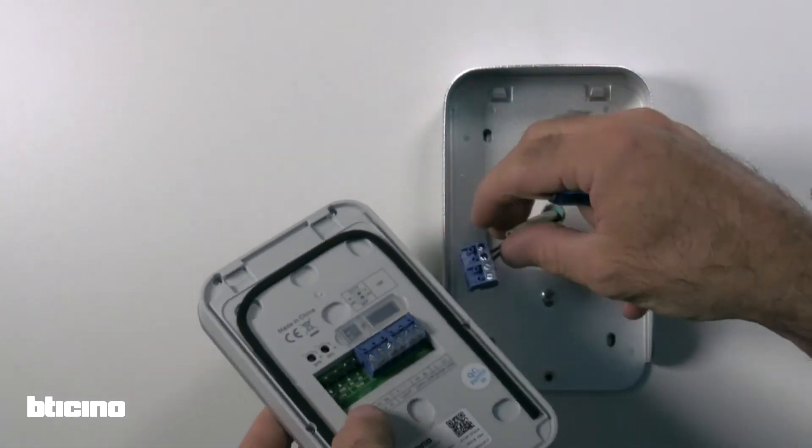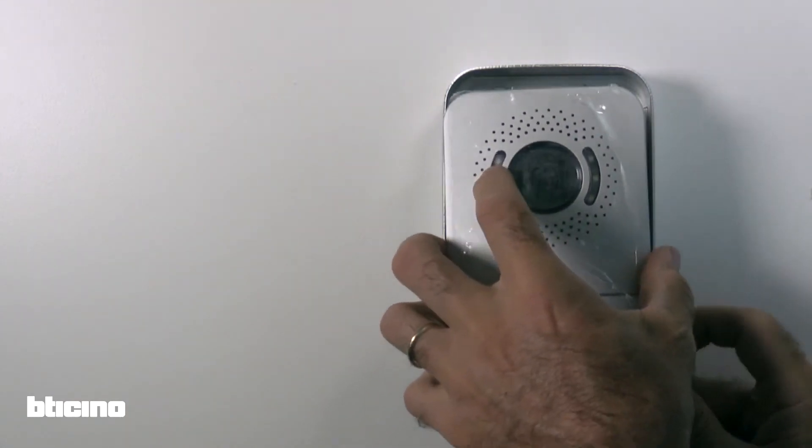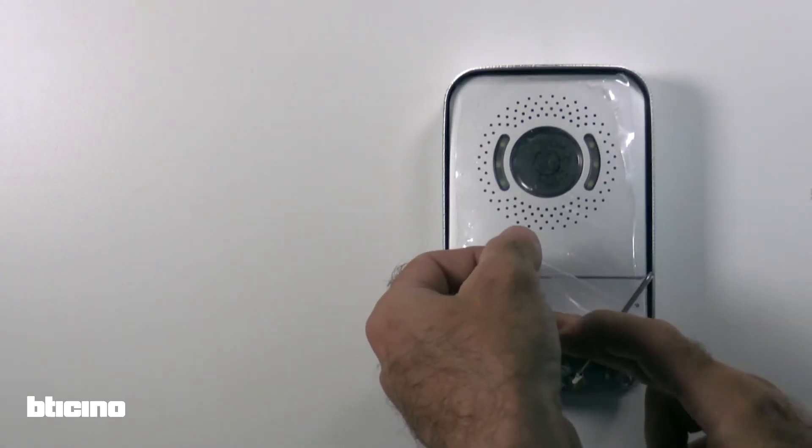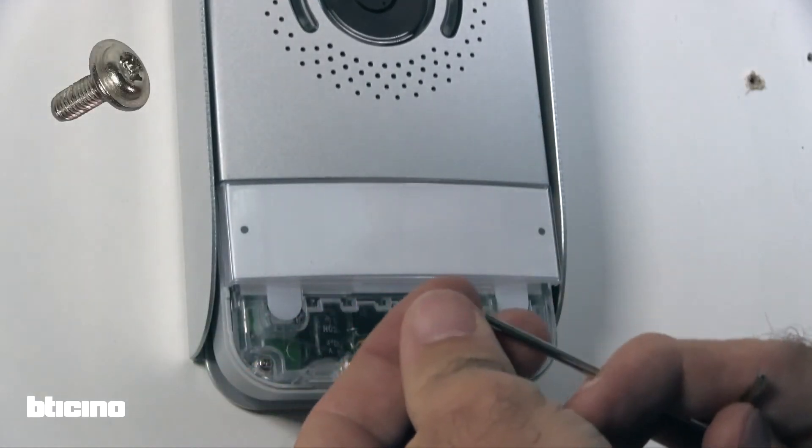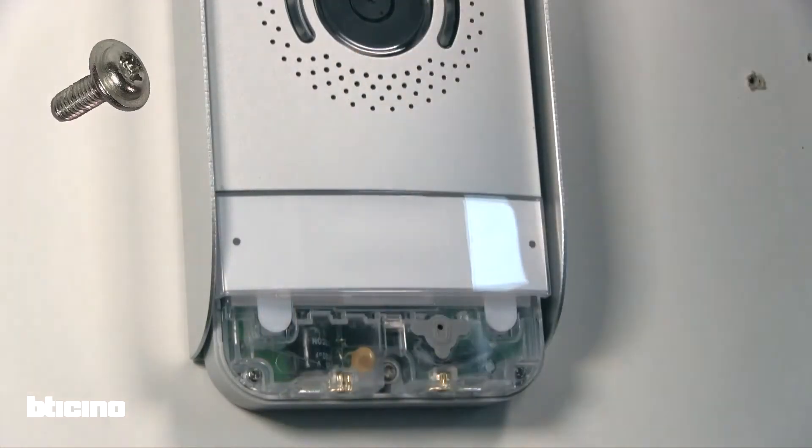Replace the terminal to the outdoor unit and attach the module on the rain cover. In your kit, you will find a M2.5 Torx screw. Use this to fix the external module to the rain cover.